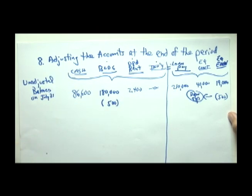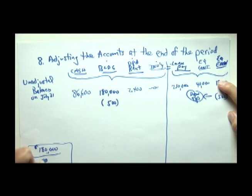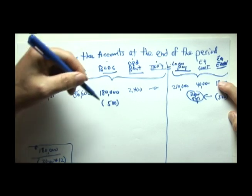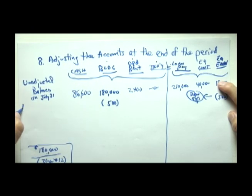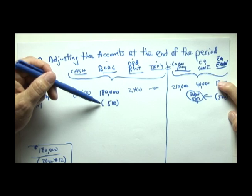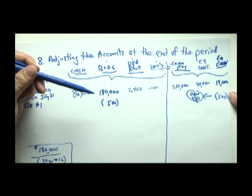Now where did I get $500? Well, let's assume that building, which costs us $180,000, is going to be used for 30 years. And we're looking at a monthly set of financials. So, 30 years times 12 is 360. So, if you take your calculator, $180,000 divided by 360 gives you this $500. So, this is called adjusting journal entry number one. Notice, if you subtract $500 from the left-hand side of the accounting equation, you've got to subtract $500 from the other side in order to balance, which we do.